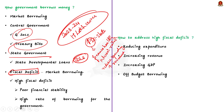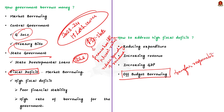There is another unsustainable way to reduce the fiscal deficit. Instead of reducing its borrowing, the government transfers the borrowing responsibility to a PSU or a special purpose vehicle. This method is called off-budget borrowing. Off-budget borrowings are loans obtained by government entities like PSUs or special purpose vehicles on behalf of the government to finance its expenditure. The market borrowing is not done by the government directly, but by a PSU or SPV.